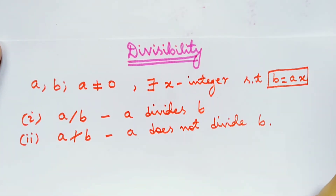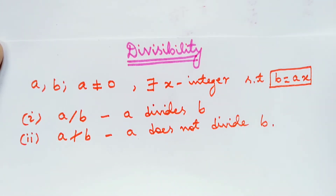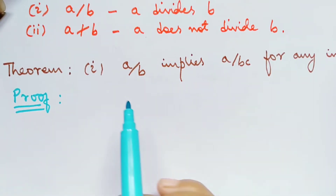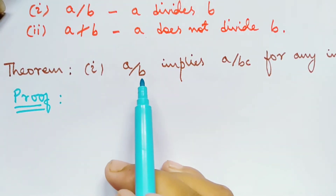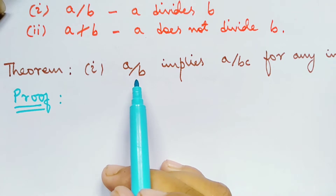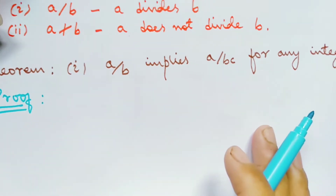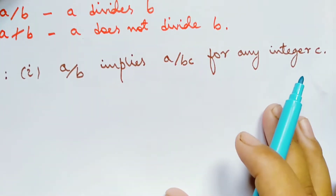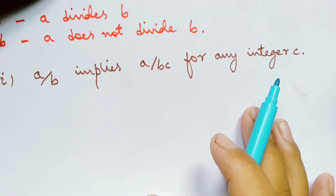Now let us come to some important theorems related to divisibility. The first theorem states: if a divides b, then it implies a divides bc for any integer c.